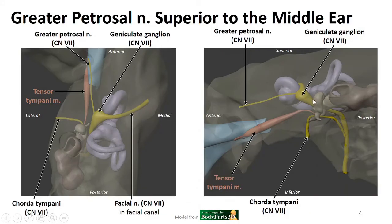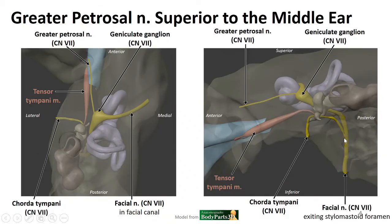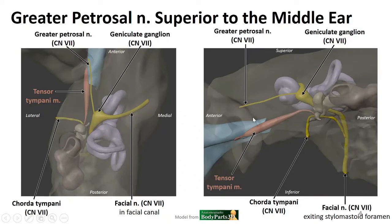From this view we can follow the facial nerve on the right side, see where it gives off the chorda tympani, which carries on toward the petrotympanic fissure. The facial nerve then exits the temporal bone through the stylomastoid foramen. The key point here is that the middle ear is here, and the greater petrosal nerve is not within it but superior to it, coursing from the geniculate ganglion anteriorly toward the foramen lacerum.